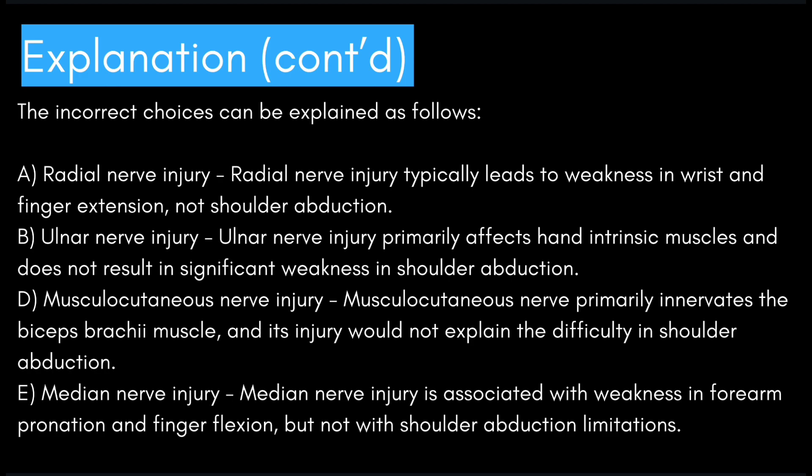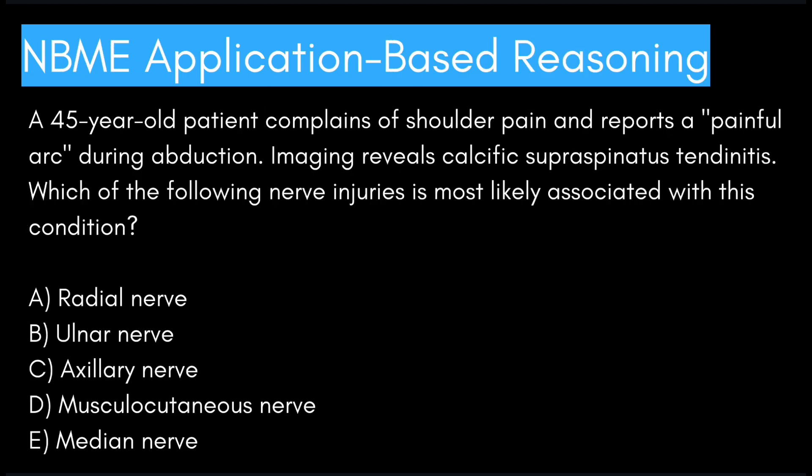Let's review why the other answer choices are incorrect. Radial nerve injury typically leads to weakness in wrist and finger extension, not shoulder abduction. Ulnar nerve injury primarily affects hand intrinsic muscles and does not result in significant weakness in shoulder abduction. Musculocutaneous nerve primarily innervates the biceps brachii muscle, so its injury would not explain difficulty in shoulder abduction. Median nerve injury is associated with weakness in forearm pronation and finger flexion, not shoulder abduction limitations.